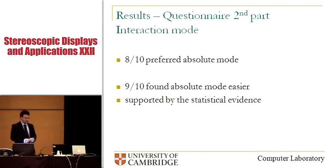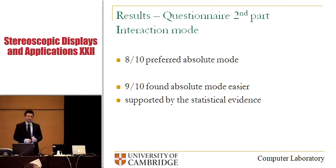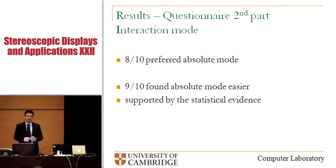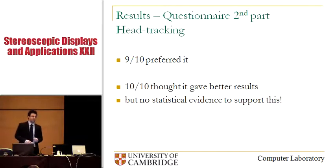The second part of the questionnaire consisted of five two-way selection questions — two concerned head tracking and three concerned the interaction mode. When asked which mode they found easier to use, nine out of ten people chose absolute mode. Eight out of ten would prefer using the absolute mode, although it was more active and potentially more fatiguing. This is supported by statistical evidence showing that absolute mode was faster and just as accurate. Regarding head tracking, nine out of ten people prefer using it, and all participants thought it helped them achieve better results, although there is no statistical evidence to support this.